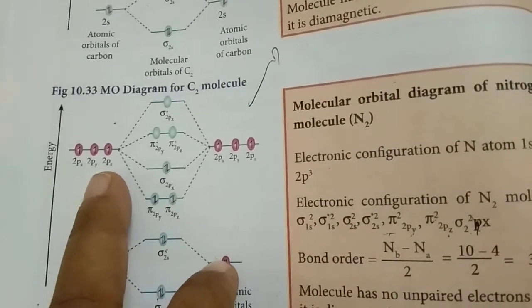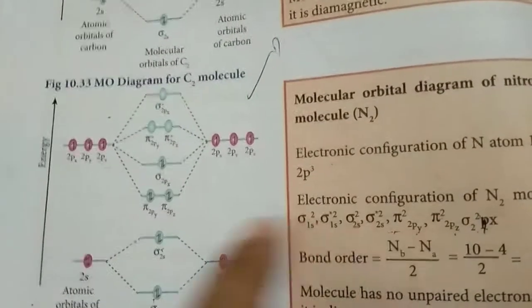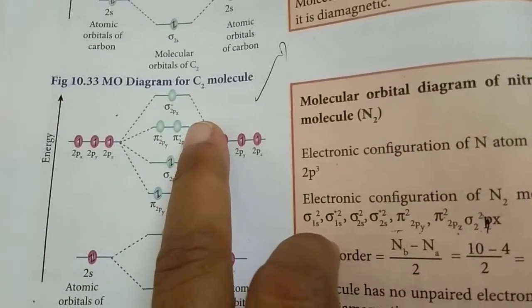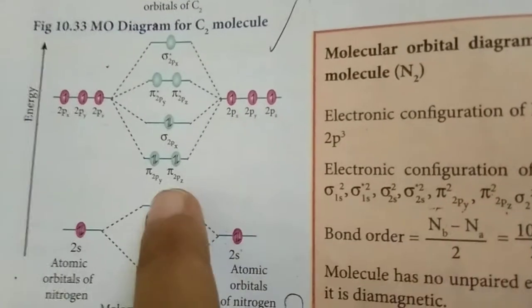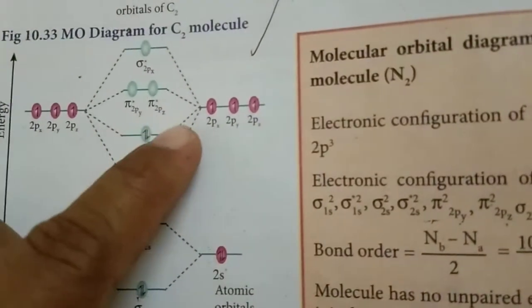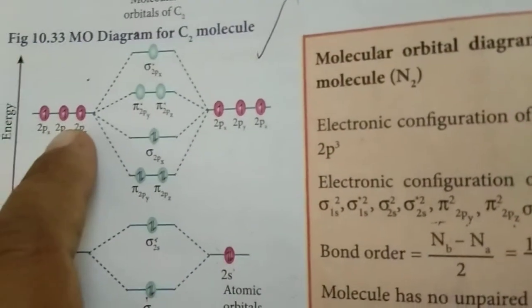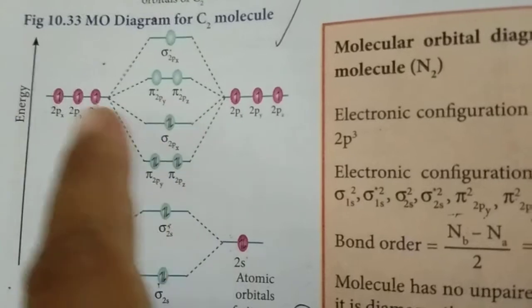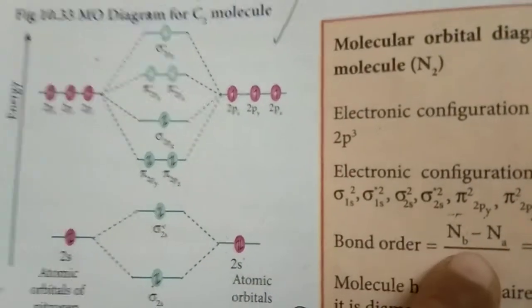For the 2p level, nitrogen has 3 electrons: 2px, 2py, and 2pz — one set for each nitrogen atom. You fill the molecular orbitals in this order: π2px with 2 electrons, π2py with 2 electrons, then σ2pz. Each nitrogen contributes 3 electrons from 2p, so together that is 6 electrons total filling the bonding 2p molecular orbitals: π2px², π2py², and σ2pz². The total electron count in the molecular orbitals matches: 3 + 3 = 6.